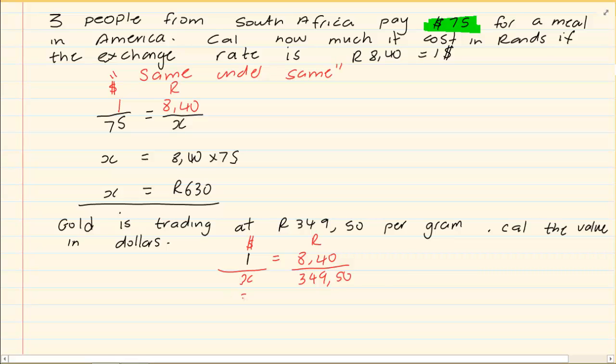Then I am going to make it equal and I am going to cross multiply. So I have got 8.40 times X equals 349.50. Divide by 8.40. And I have X equals 41.61 dollars.